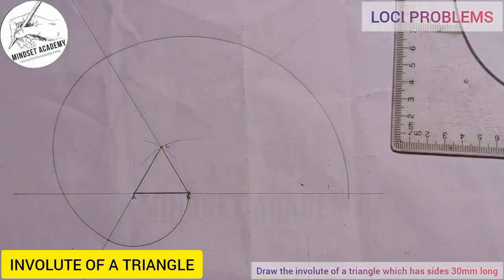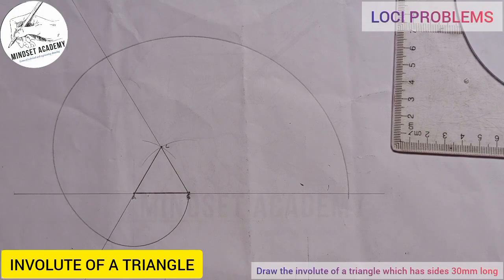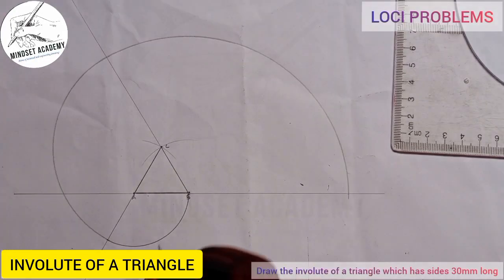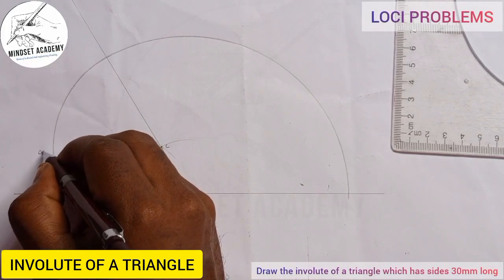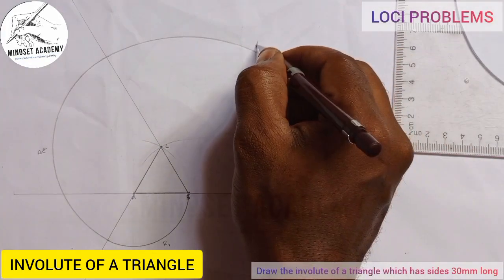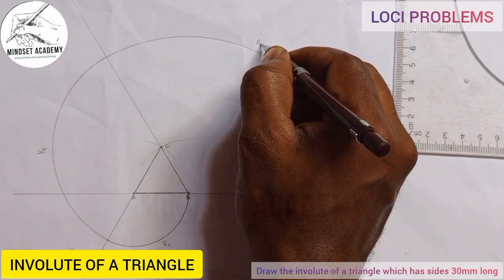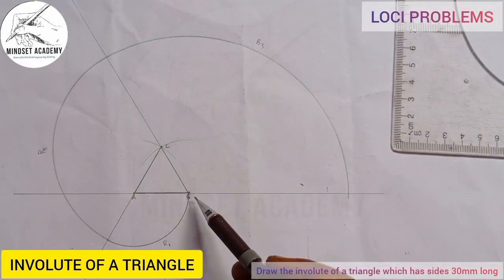This is what we have here. This is the involute. This is the first radius R1, this is the second radius R2, and this is the third one R3.